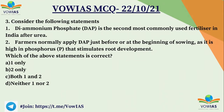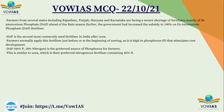Let's look at the third question. Consider the following statements. First one: diammonium phosphate is the second most commonly used fertilizer in India after urea. Second one: farmers normally apply diammonium phosphate just before or at the beginning of sowing, as it is high in phosphorus that stimulates root development. The correct option is C, both 1 and 2. Farmers from several states including Rajasthan, Punjab, Haryana and Karnataka are facing a severe shortage of diammonium phosphate ahead of the rabi season. The government has increased the subsidy to 140% on this fertilizer. Diammonium phosphate consists of 46% phosphorus and 18% nitrogen, and is the preferred source of phosphorus for fertilizers — similar to urea, which is the preferred nitrogenous fertilizer consisting of 46% nitrogen.